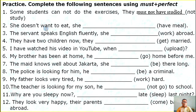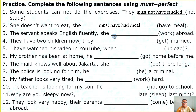Number two: She doesn't want to eat. She must have had a meal. Number three: The servant speaks English slowly. She must have worked abroad.